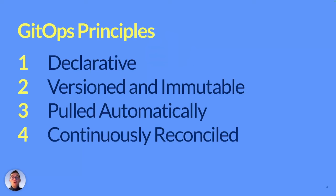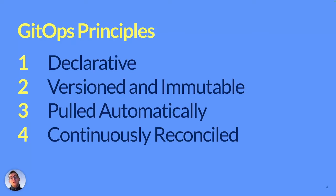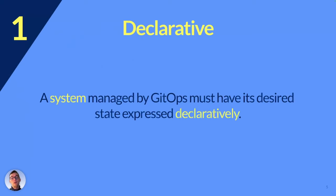The GitOps principles are defined and managed by the CNCF's OpenGitOps project, which was founded by companies including AWS, Microsoft, Codefresh, and Weaveworks — who also coined the term GitOps. It's part of the Application Delivery Special Interest Group in the CNCF. The four GitOps principles — declarative, versioned, immutable, pulled automatically, and continuously reconciled — were first published in October 2021.